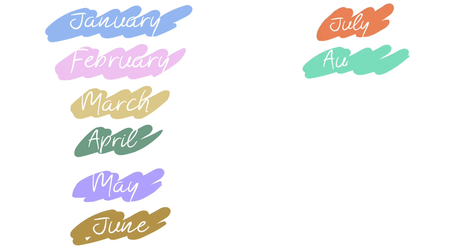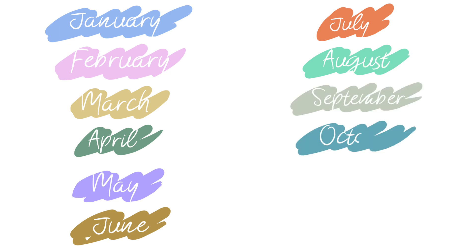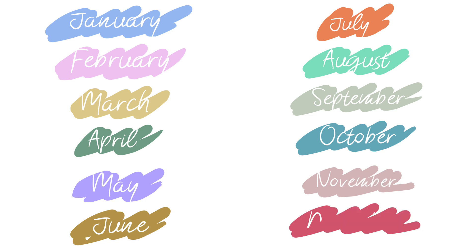So we have 12 months in a year: January, February, March, April, May, June, July, August, September, October, November and December.